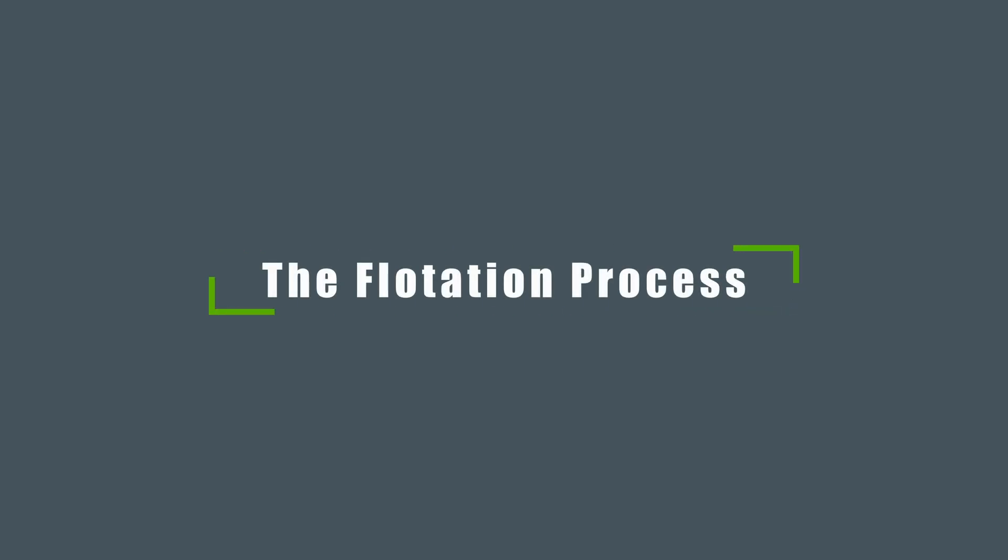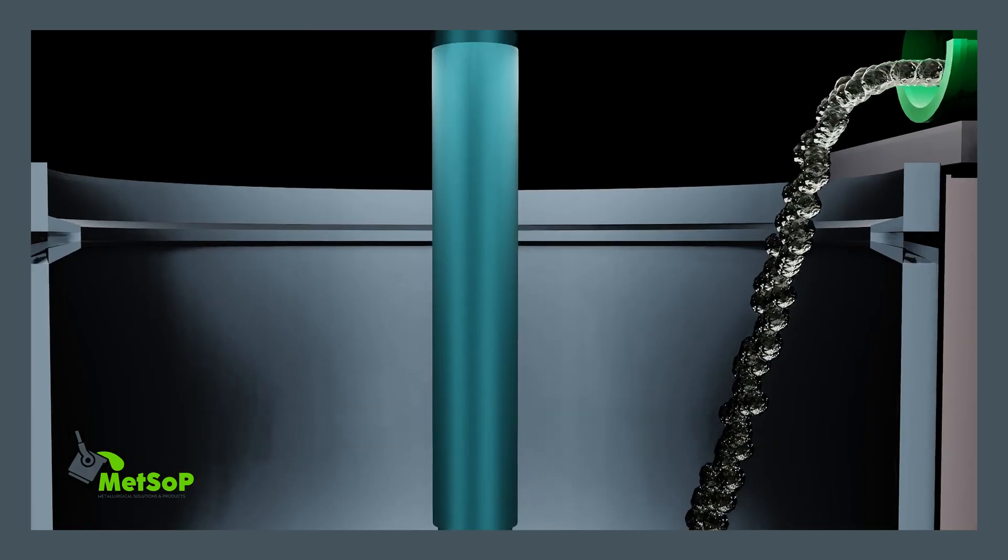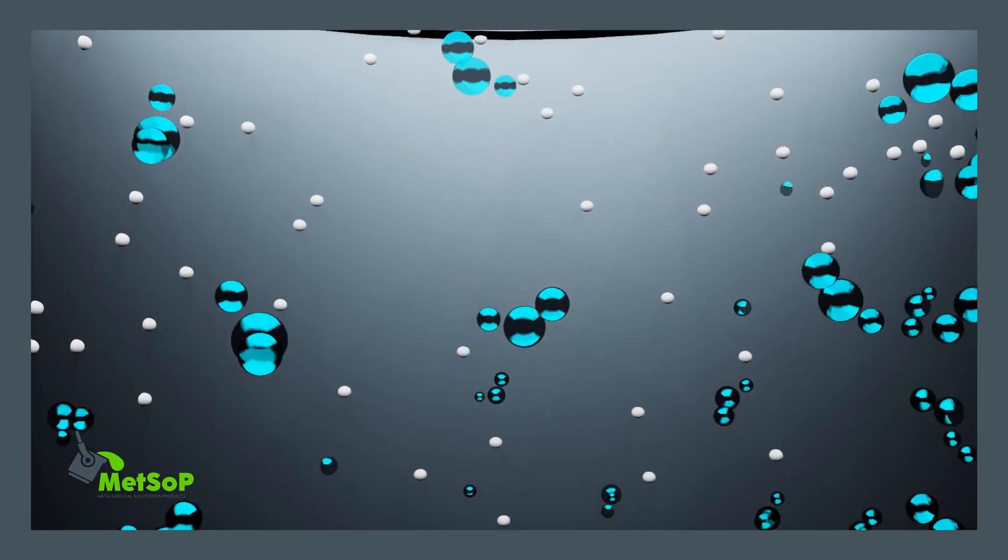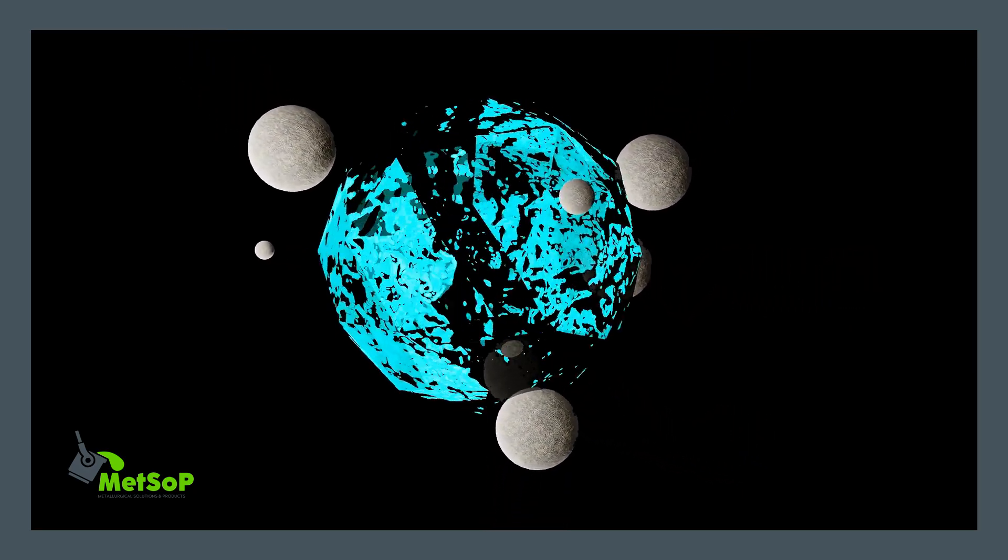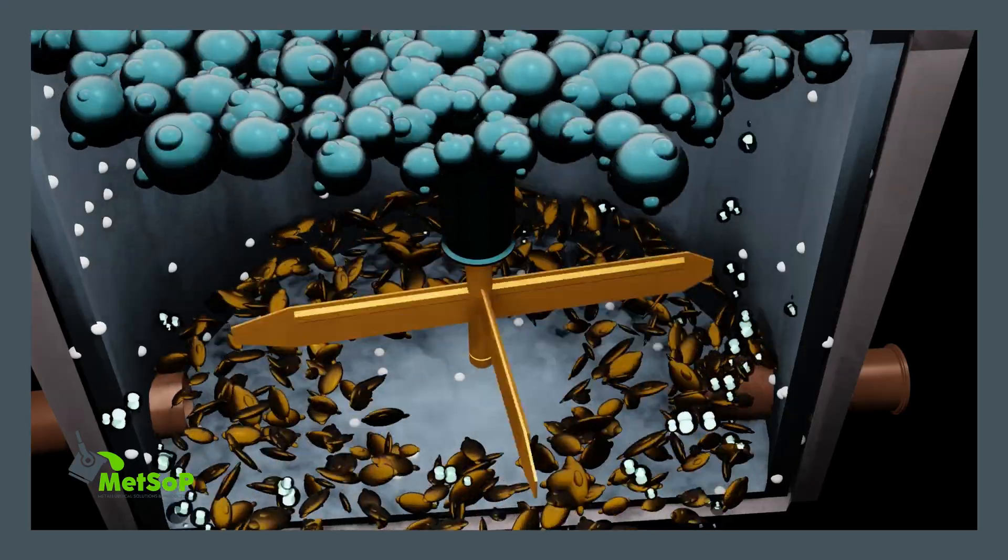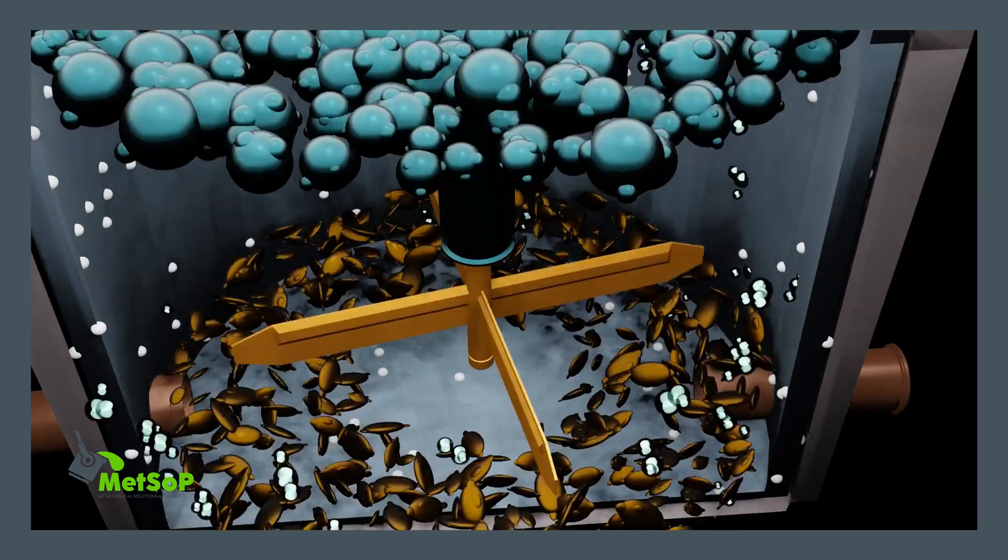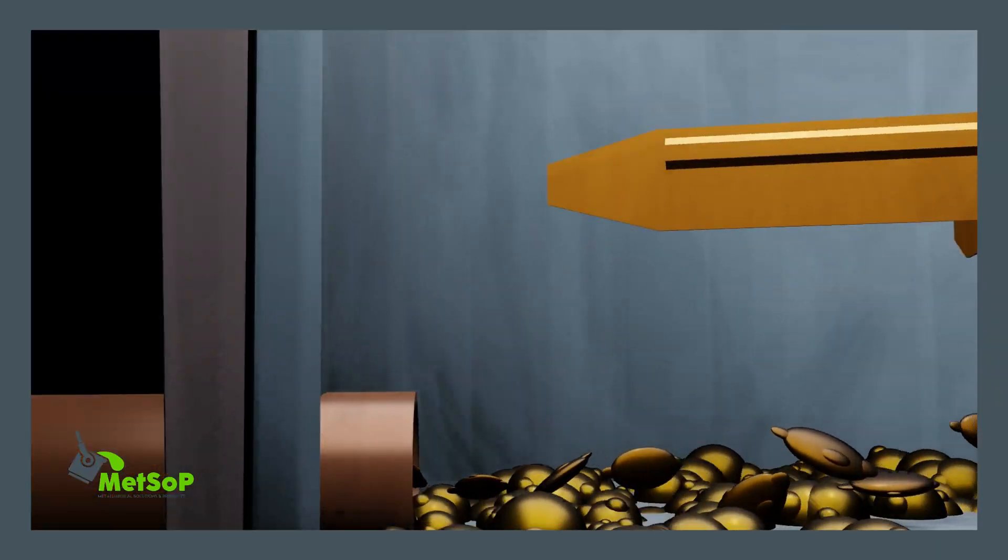The flotation process begins by mixing finely ground ore with water to form a slurry. Air bubbles are introduced and the valuable mineral particles are made hydrophobic or water repellent so they attach to these bubbles and rise to the top as froth. Generally the unwanted gang remains hydrophilic, staying in the water and sinking to the bottom for easy separation.